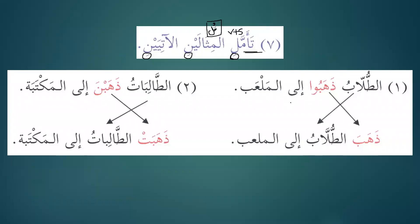Al-tullabu dhahabu ilal mal'abi — the students went to the playground. Now this is a nominal sentence. A nominal sentence consists of subject and predicate, and the subject and predicate are equal in number and gender. The verb has to follow the noun. If the noun is dual, the verb will be dual. Al-talibatu dhahabna ilal maktabati — the feminine students went to the library, so the verb dhahabna follows al-talibatu.